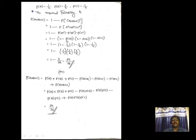Continuing Method 2: P(A′) = 1 − 1/2 = 1/2, P(B′) = 1 − 3/4 = 1/4, P(C′) = 1 − 1/4 = 3/4. Substituting: P(A ∪ B ∪ C) = 1 − (1/2)(1/4)(3/4) = 29/32. Both methods give the same answer, 29/32.